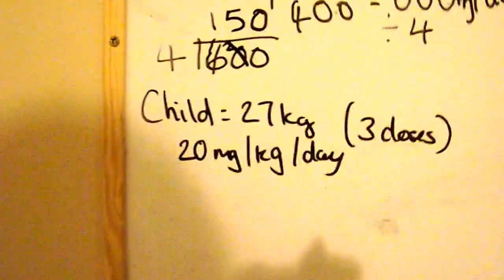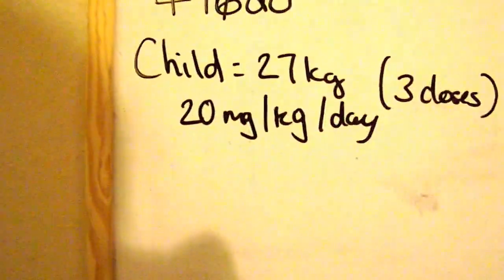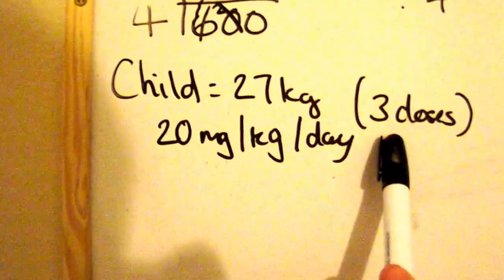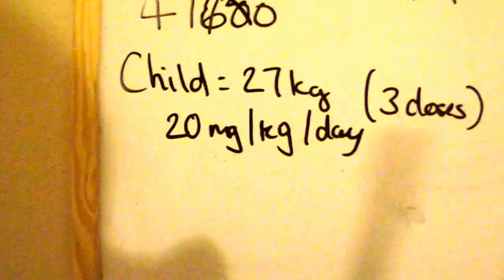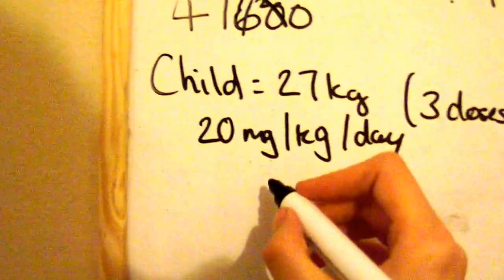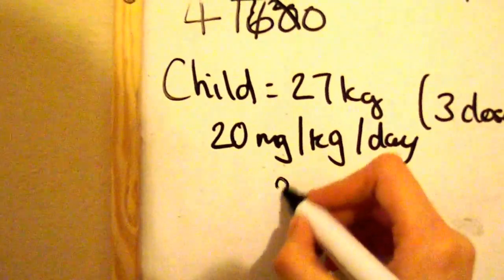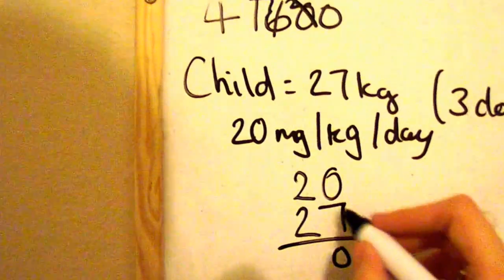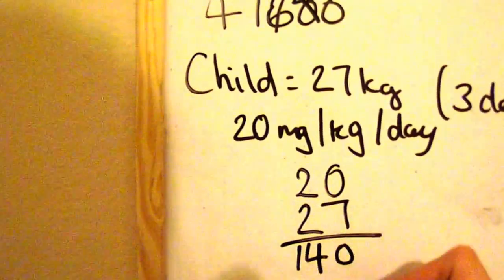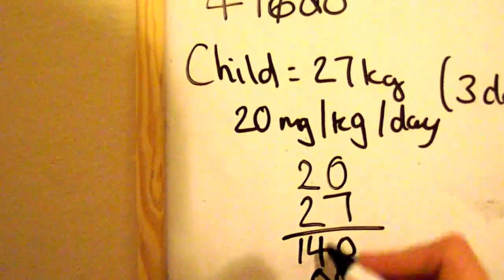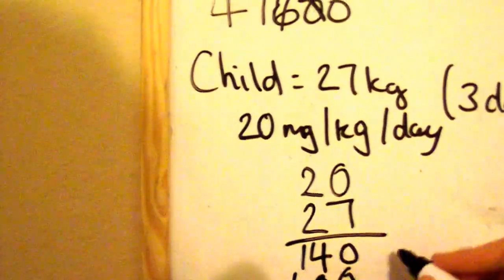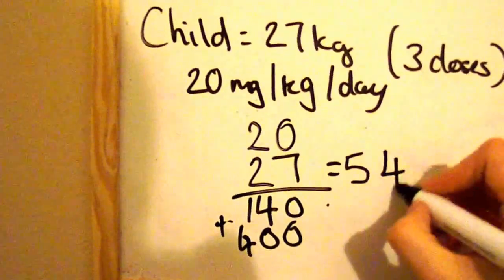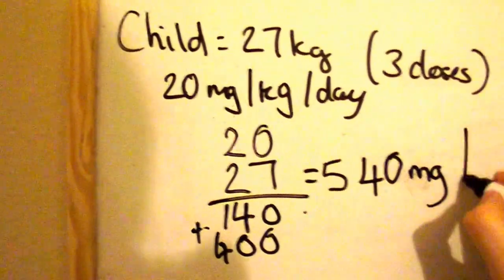So I hope this is making sense to you guys and I'm just going to flip to the last example we have here. Again, we have a child that's 27 kilograms, this time 20 milligrams per kilogram per day. The key difference here is that it's 3 doses per day. You do it exactly the same but I'm just going to explain to illustrate. So you're doing the 20 and 27 times both. The 7 times 0 is 0, 7 times 2 is 14. You're adding your 0, 2 times 0 is 0, 2 times 2 is 4. So you've immediately got there 540 milligrams per day.